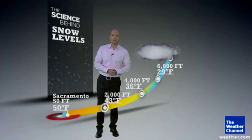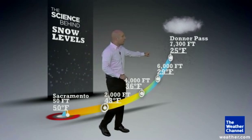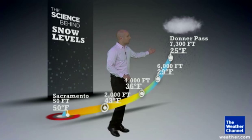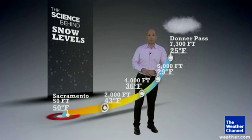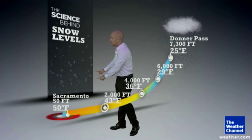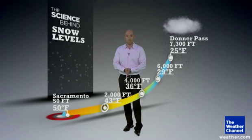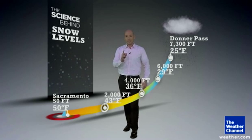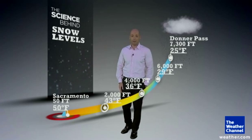Donner Pass is all the way up at 7,300 feet — 25 degrees. So what started out as 50 degrees just from the environment has cooled down into the mid-20s. You've got to be careful when driving those elevated roads like I-80.